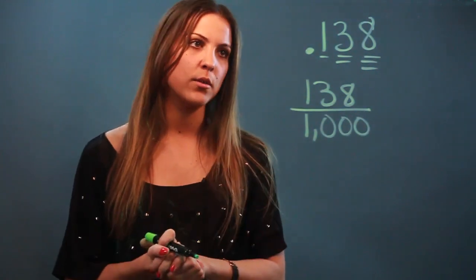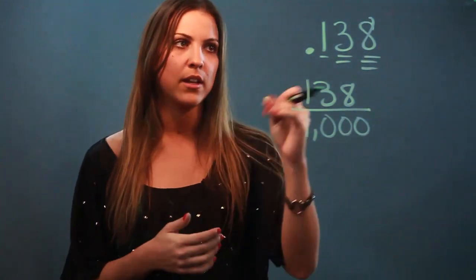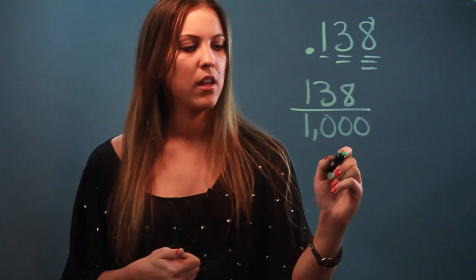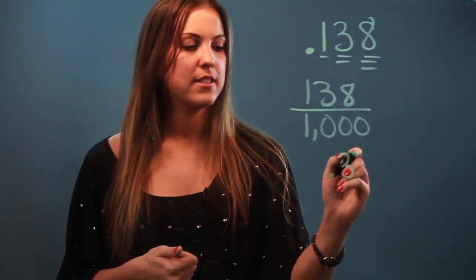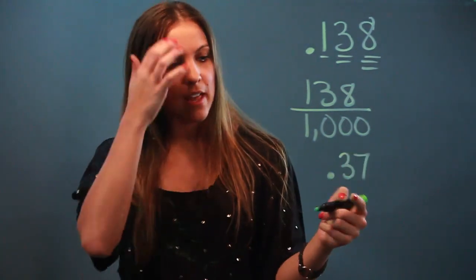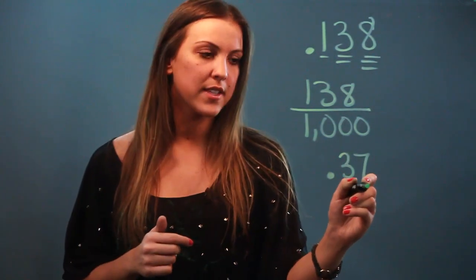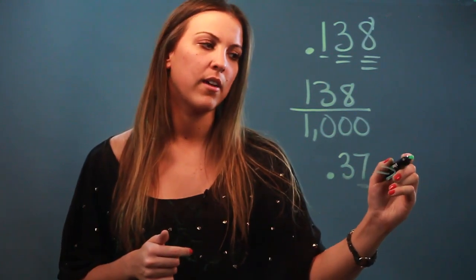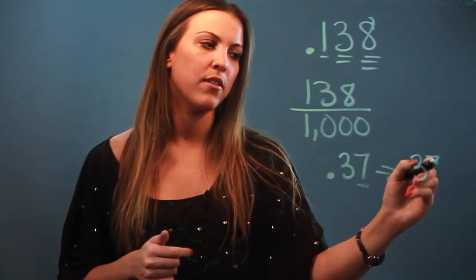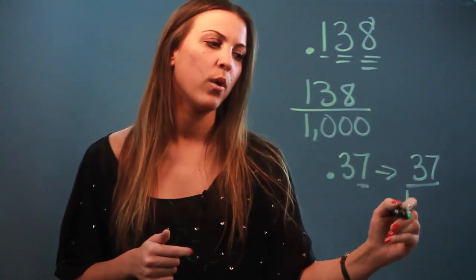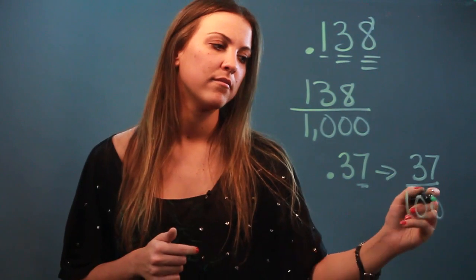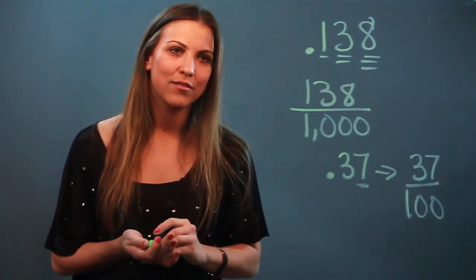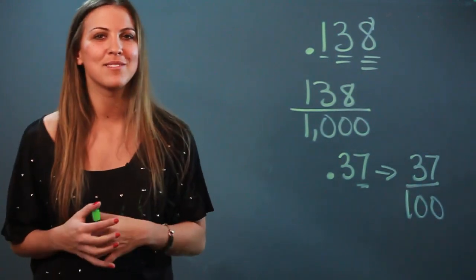And that's all there is to it, and you can do the same thing for the hundredths. So if I had a decimal like 0.37, which would be read as 37 hundredths, I would write it as 37 over 100. So I just showed you how to convert from the thousandths into a fraction.